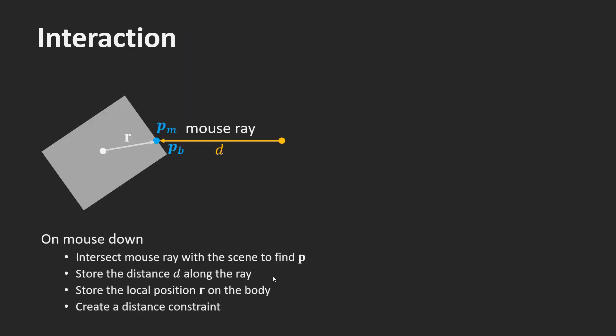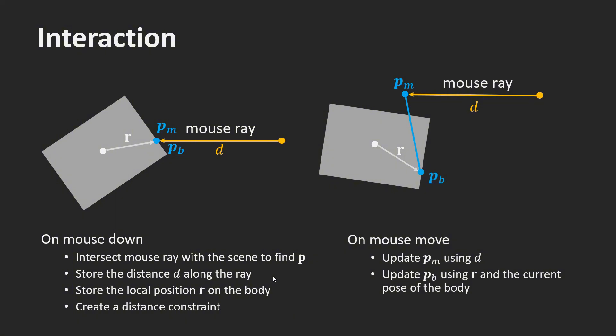On my last slide, I show you how to use a distance constraint to drag objects with the mouse. The 2D location of a mouse can be interpreted as a ray along the camera direction. If it intersects a body, I compute the intersection point of the ray with the body. I store the distance d to the intersection point. I also store the position p in the body's local frame as r. Then I create a distance constraint with zero rest length between the body and the fixed point in space located at p. On the mouse move event, I update the fixed point using the new mouse ray and the stored distance d. I also update the attachment point on the body using the current pose. On mouse up, I simply disable the constraint.